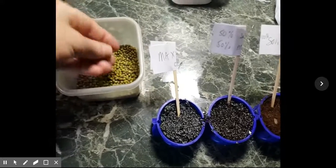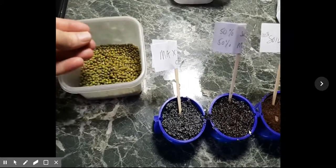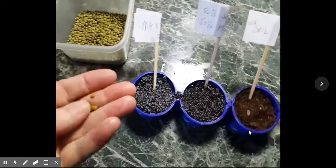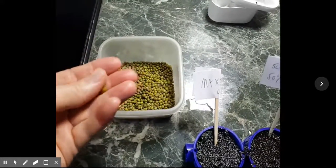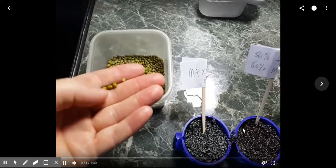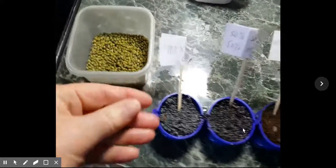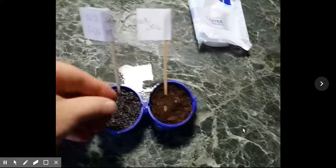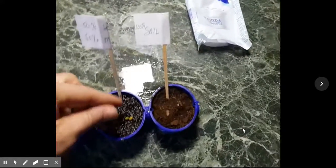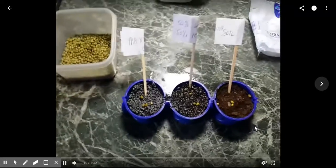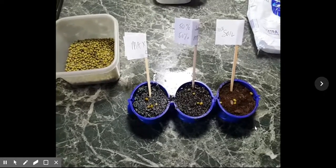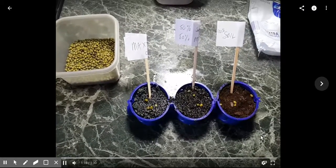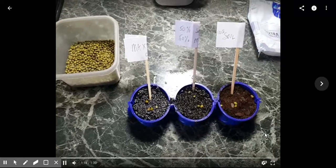I'm going to put four of these mung beans. These mung beans grow really fast and we've had a lot of success in getting them to sprout. So I'm going to put four in there, four in there, and one, two, three, four in there. And then they will go under a grow lamp and we'll see which ones grow faster. That is the goal. Which ones will grow faster?